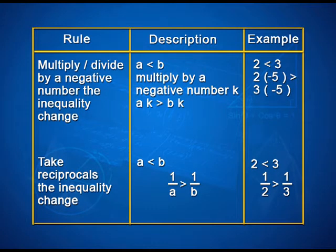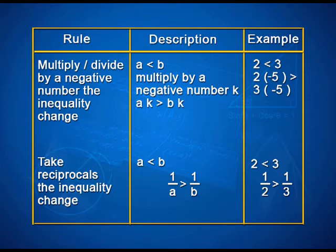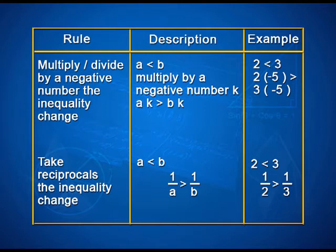Rule 3: If we multiply or divide by a negative number, the inequality reverses. That is, if a < b and we multiply by a negative number k, then a×k > b×k. For example, 2 < 3 implies 2×(−5) = −10 > 3×(−5) = −15. Rule 4: Taking reciprocals on both sides also reverses the inequality — if a < b then 1/a > 1/b. For example, 2 < 3 implies 1/2 > 1/3. These same rules apply for >, ≥, and ≤ inequalities as well.